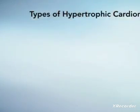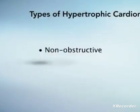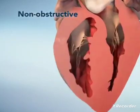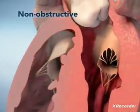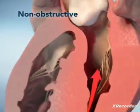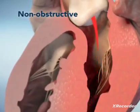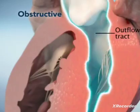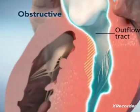Hypertrophic cardiomyopathy can be non-obstructive or obstructive. If you have non-obstructive hypertrophic cardiomyopathy, your heart has thickened walls, but the walls and mitral valve do not block blood flow out of your left ventricle. In obstructive hypertrophic cardiomyopathy, the heart has thickened walls as well, but the septum may bulge into the path where blood leaves the left ventricle, called the outflow tract.